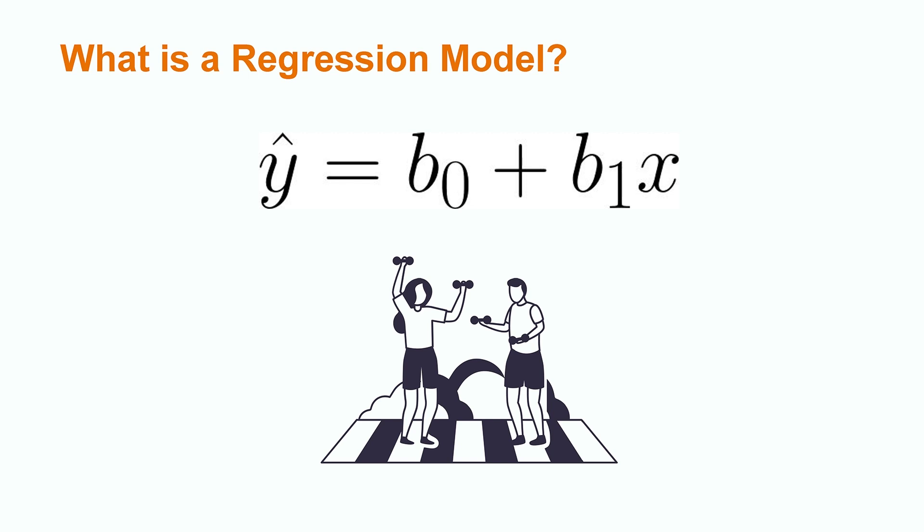A regression model helps describe the relationship between one or more independent variables and one dependent variable. In our psychologist example, exercise will be our independent variable and mental health will be our dependent variable because we want to see if mental health is dependent on exercise.